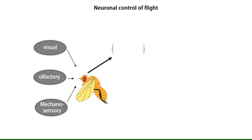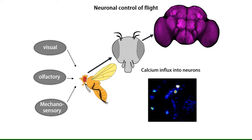Activity in such neurons can be visualized by measuring changes in calcium. In our studies with fruit flies, we have identified groups of cells that form a neural circuit and help maintain flight for longer duration.